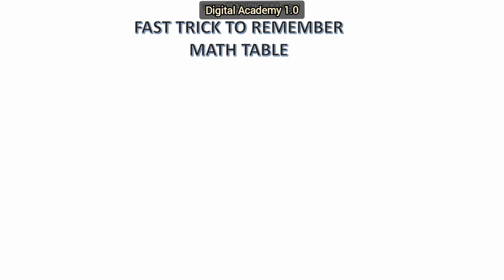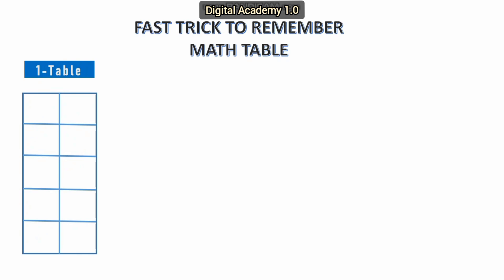First, let us see the one table. That is very easy. For that, just we have to write the number from 1 to 10. So enter the numbers like 1, 2, 3, 4, 5, 6, 7, 8, 9, 10. That's all. This is the one table.